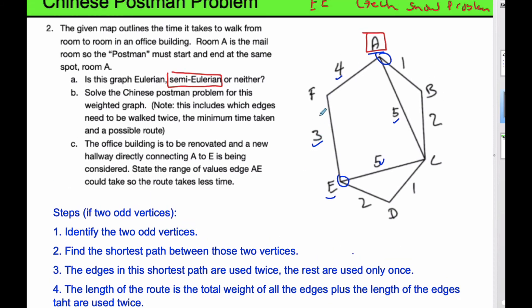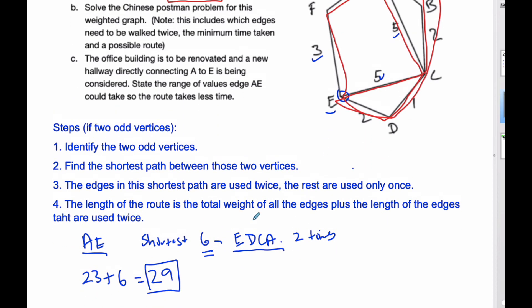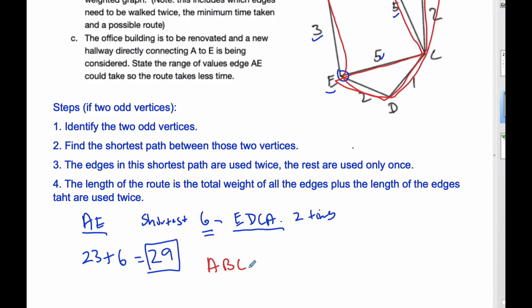A possible route could simply be, I have to start at A and end at A, so I'm going to go A, B, C, D, E to C to A to F to E and then all the way around the outside again. To name it, it's going to go A to B to C to D to E to C to A to F to E to D, C, B, and A.